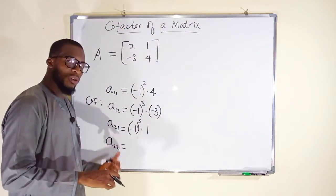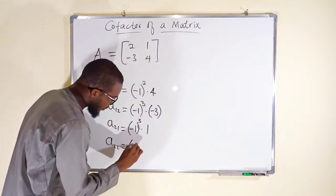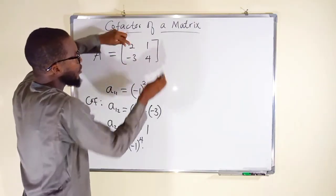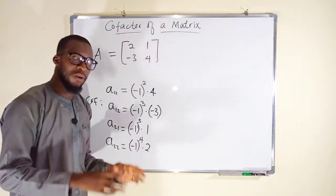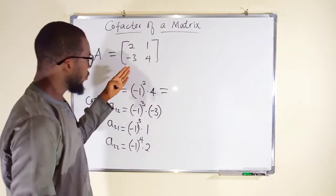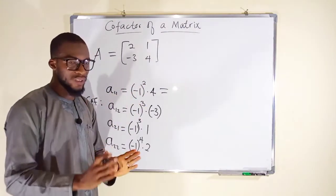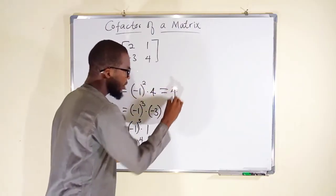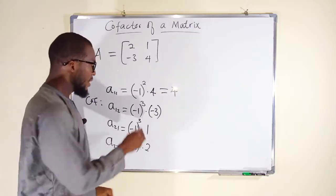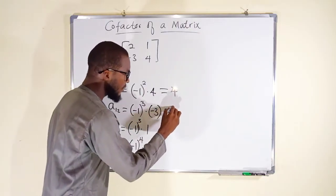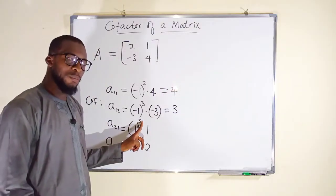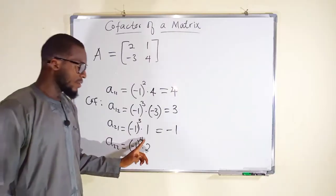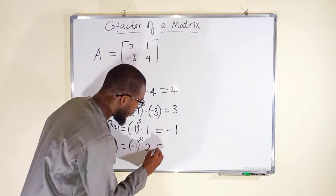For the last element A22, second row second column, we take negative 1 raised to the power of 2 plus 2, which is 4, then multiply by the minor. Deleting that column and row leaves 2. Now simplifying: when the power is even, negative 1 becomes positive 1. So A11 gives positive 1 times 4 equals 4. The odd power for A12 keeps the negative sign: negative 1 times negative 3 is positive 3. A21 also has odd power giving negative 1. A22 has even power: positive 1 times 2 is positive 2.